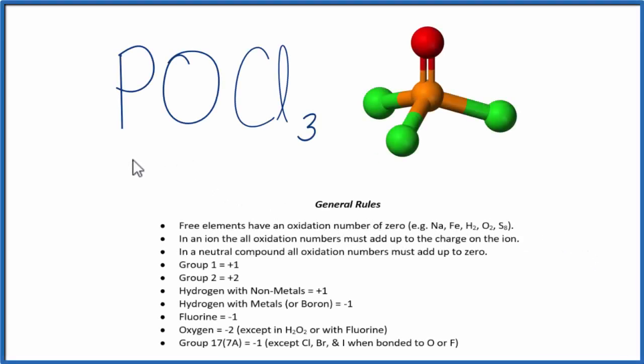In this video, we'll find the oxidation numbers for each element in POCl3. The phosphorus, that's the orange, the red, that's the oxygen, and then the three green atoms, those are the chlorines.